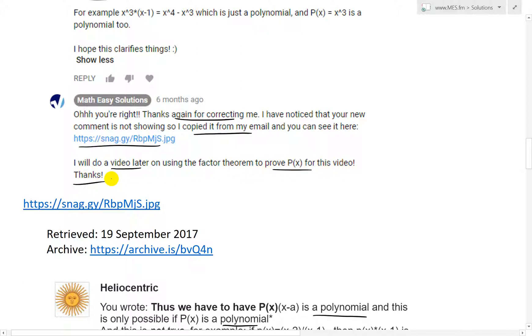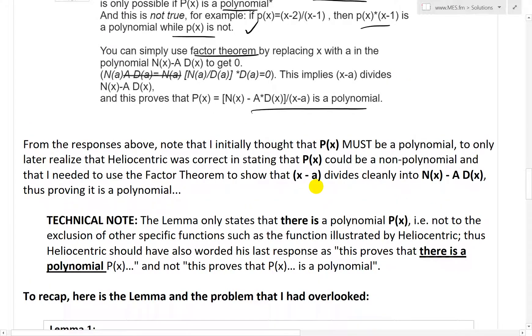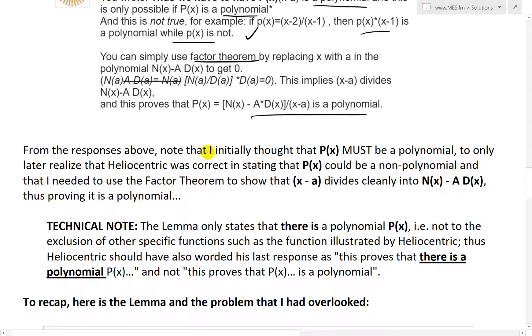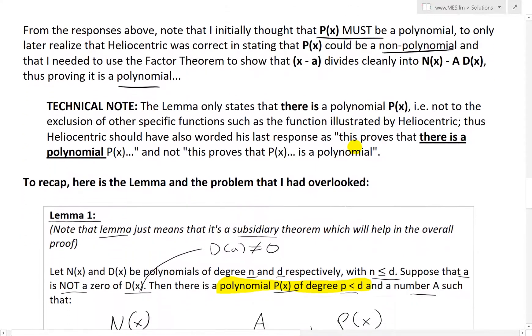So yeah, thanks a lot Heliocentric. This was six months ago and I got to keep my word. Note from the responses above that I initially thought P(x) must be a polynomial to only later realize that Heliocentric was correct in saying that P(x) could be a non-polynomial and that I needed to use the factor theorem to show that (x-a) divides cleanly into N(x) - a*D(x). That's proving it is a polynomial and I'll get to that in a bit.